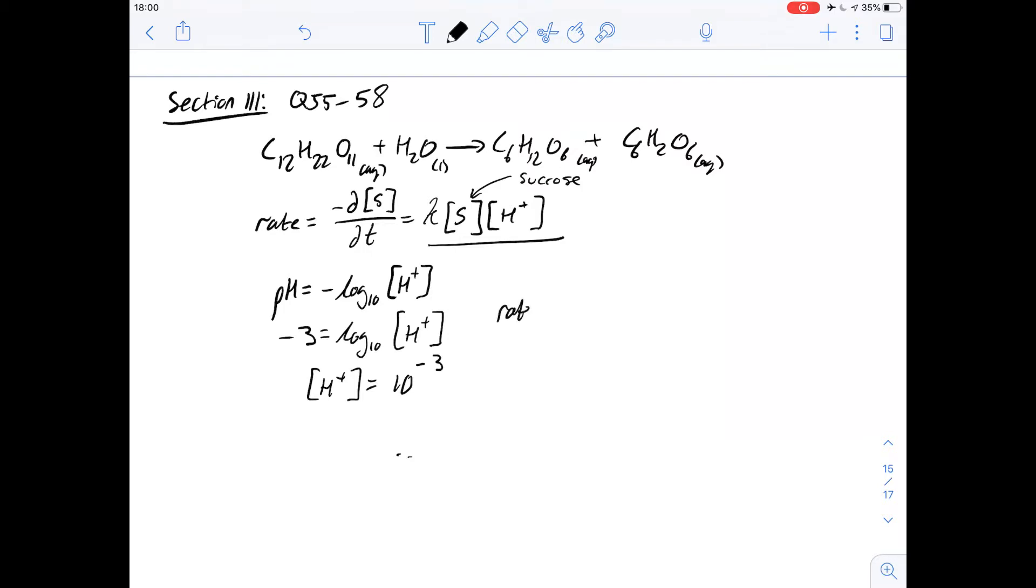So if we plug this into our rate equation, we know that the value for k is 1.4 times 10 to the minus 5 multiplied by 0.1 for the concentration of sucrose multiplied by the concentration of hydrogen ions. This will give us an answer of 1.4 times 10 to the minus 9. In that case, it gives us an answer of A for number 55.